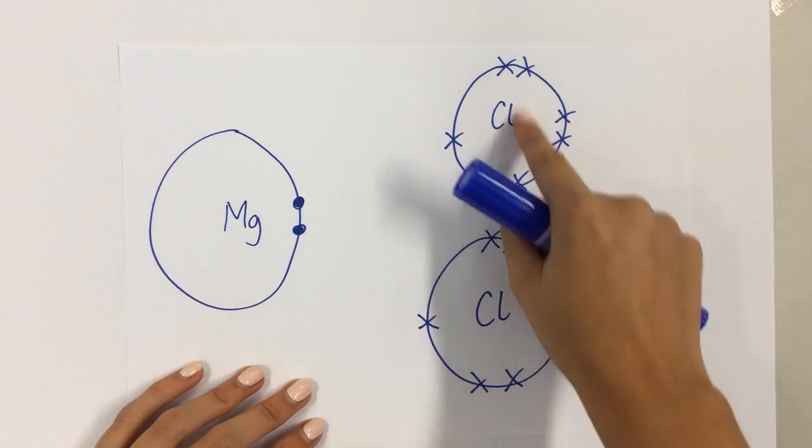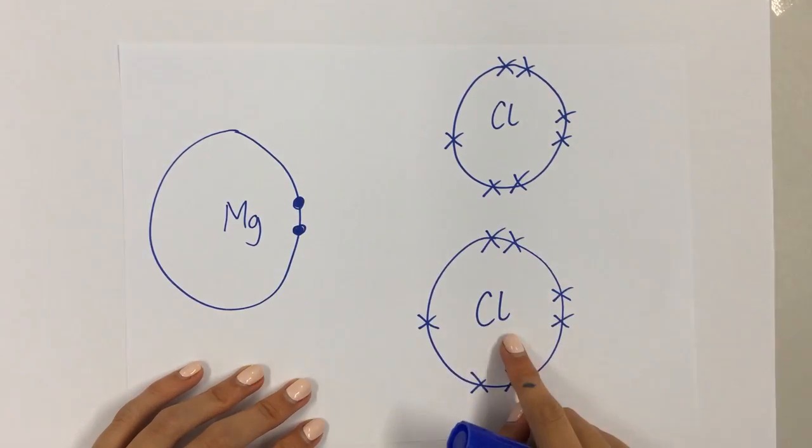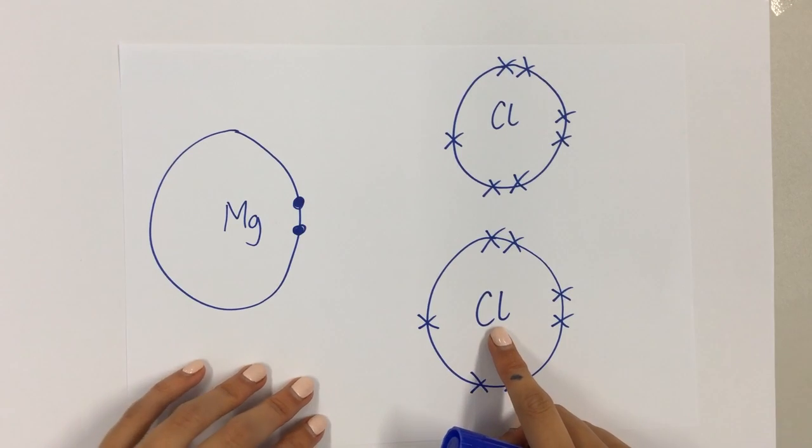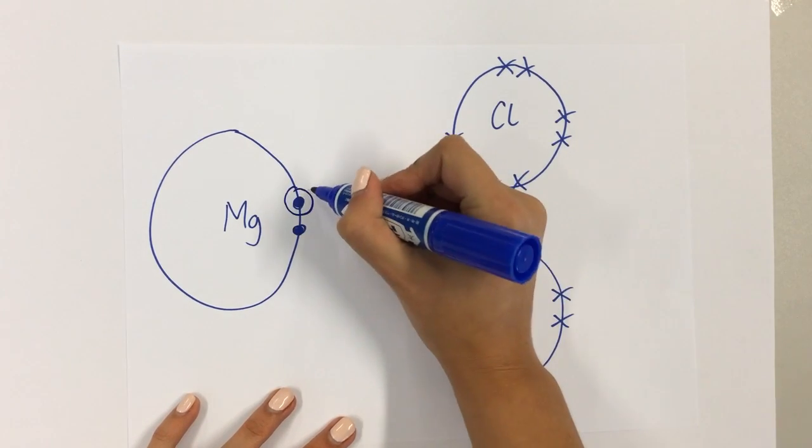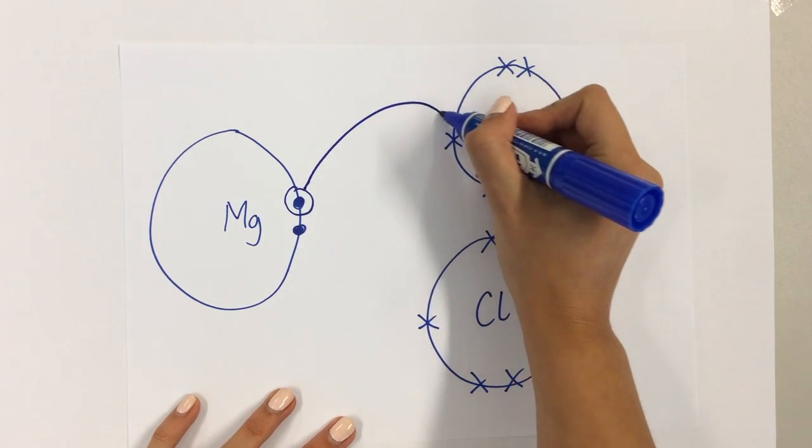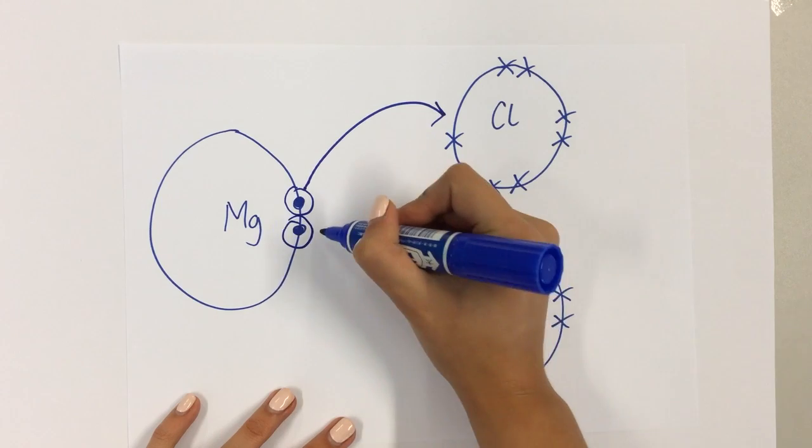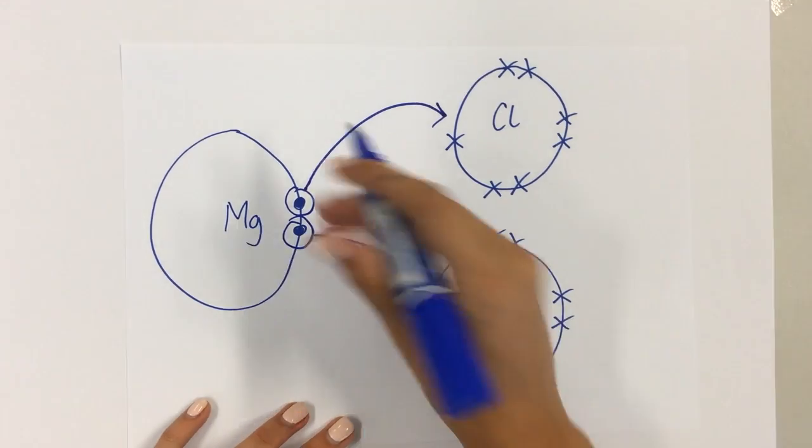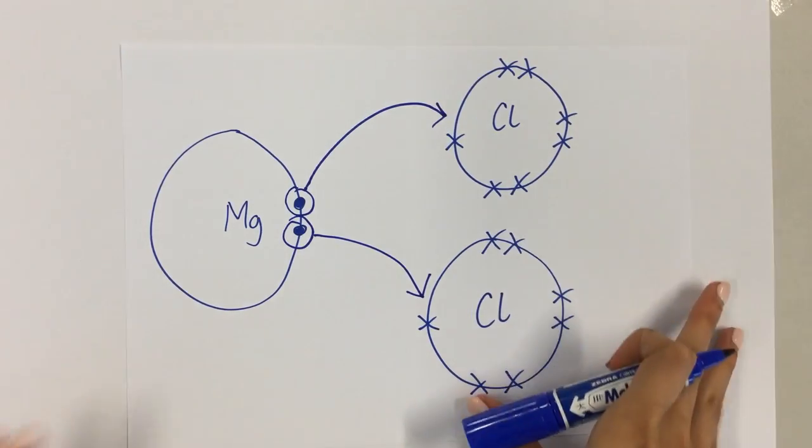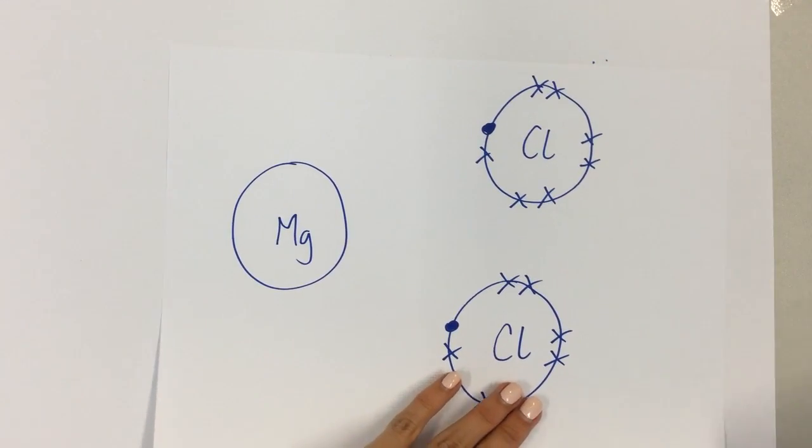If I've got two chlorines, that means that I can make all of these elements happy. I can make all of them stable with a full outer shell because one of these electrons here, in the magnesium, can be transferred to this chlorine here. The other one can be transferred to the other chlorine. If I transfer those electrons there, what I eventually get is something that looks like this. This is your after. This is what happens at the end.